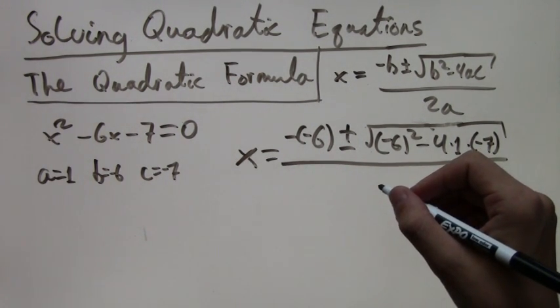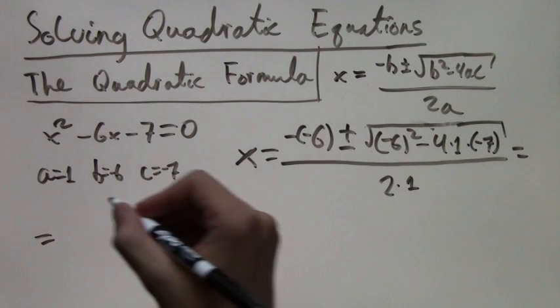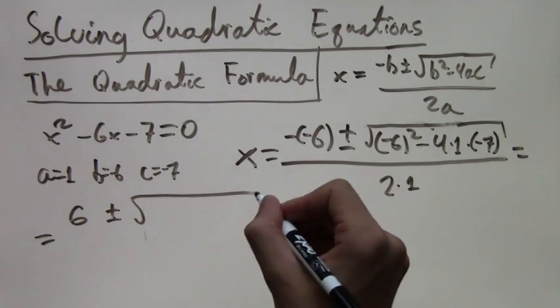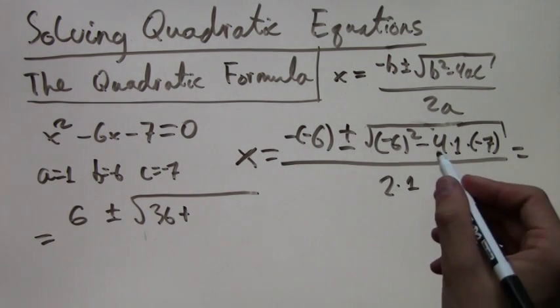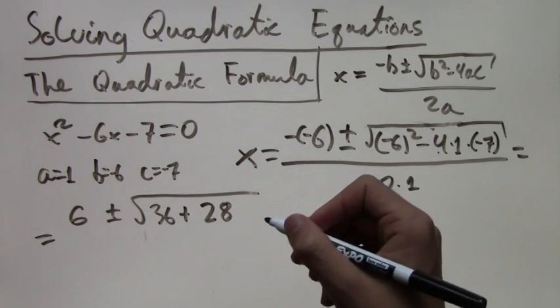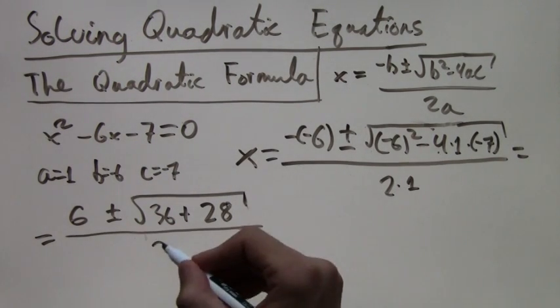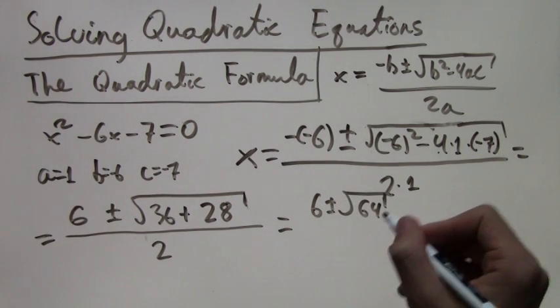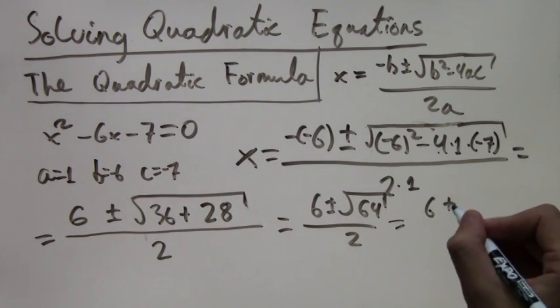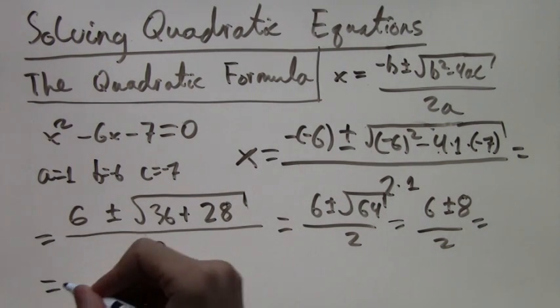Because a equals 1. So we have 2 times 1. This simplifies to positive 6 plus or minus square root of negative 6 squared is 36. And then we have minus 4 times negative 7. So it's plus. Two negatives make a plus. And 4 times 1 times 7 is 28. And this is all over 2. This equals 6 plus or minus square root of 64 all over 2. The square root of 64 is just 8. So this is 6 plus or minus 8 over 2. Which when we simplify we get 3 plus or minus 4.